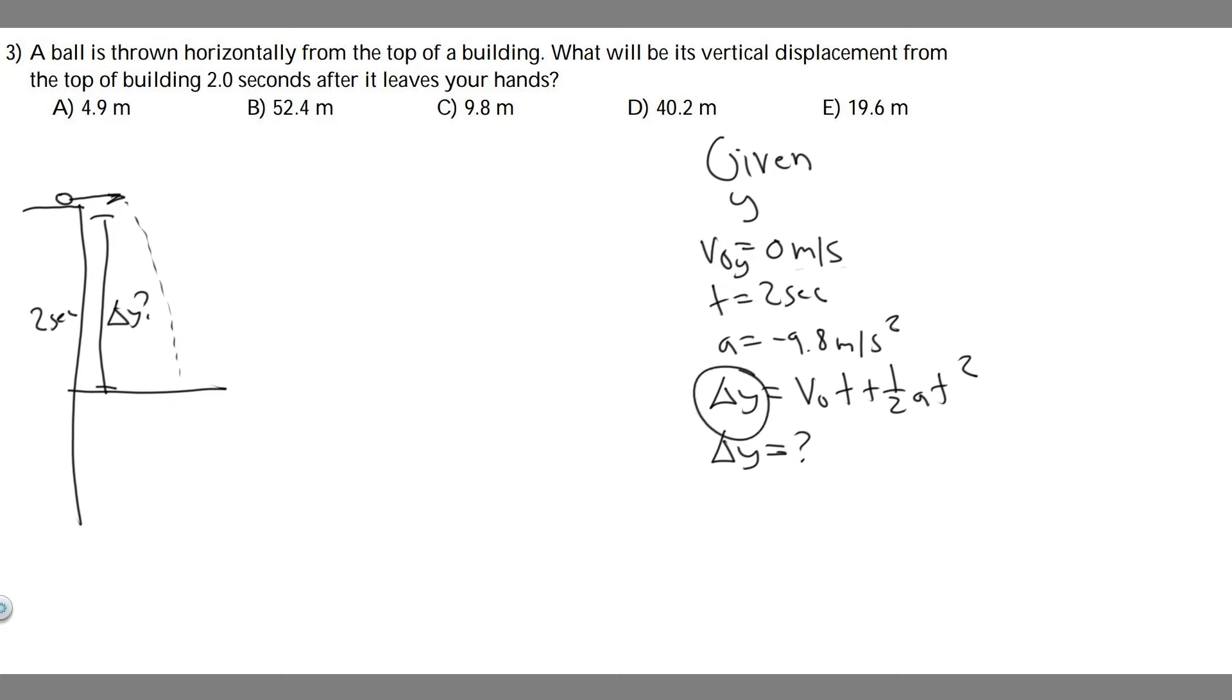And if we want to solve for delta y, we can use this equation right here. So delta y equals v sub 0 times t plus 1 half at squared. We're just going to plug in v sub 0. We're going to plug in t, and we're going to plug in a.